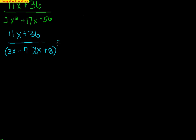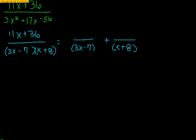Since they are linear, what we must do is break the rational function into two separate fractions — one fraction for each factor. So we will get one fraction with (3x − 7) in the denominator, plus another fraction with (x + 8) in the denominator. We are going to use constants A and B, and we will solve for what A and B equal. That was a distinct linear example.